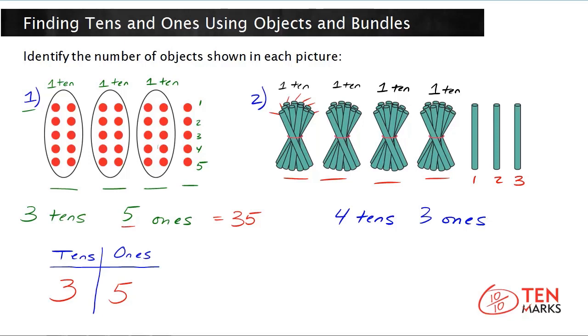So you have four tens, that means a four goes in the tens column. And you have three ones, so you put a three in the ones column. And that means that this picture shows four tens and three ones, or forty-three altogether.